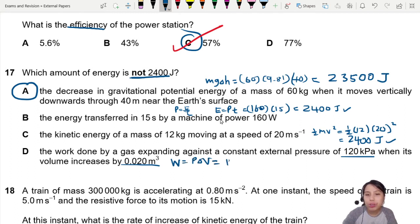So this will be 120 times kilo—kilo is power three, okay—kilo pascal. Change in volume is 0.020. This will give us a value of also 2400 joules. Okay.